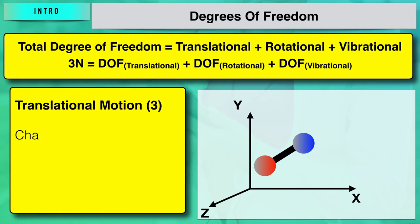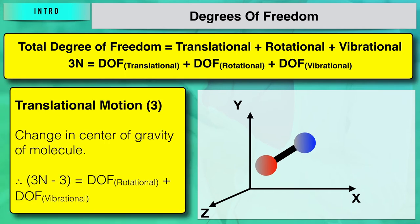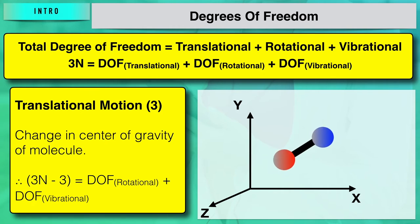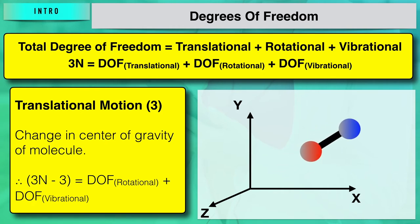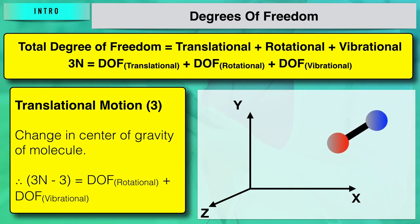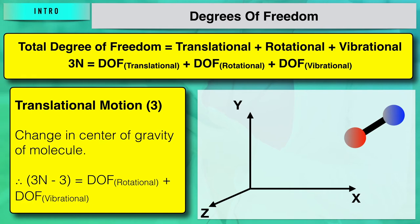If we consider the translational motion of the molecule, it causes a change in the center of gravity of the molecule. This change is possible across three coordinates x, y, and z. Hence, there are three translational degrees of freedom.